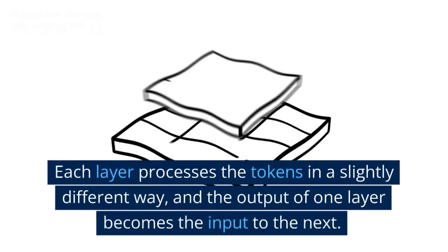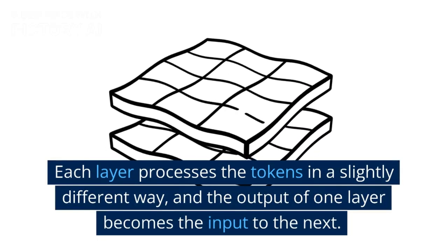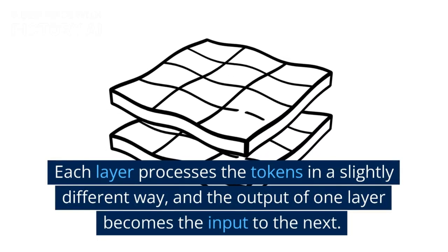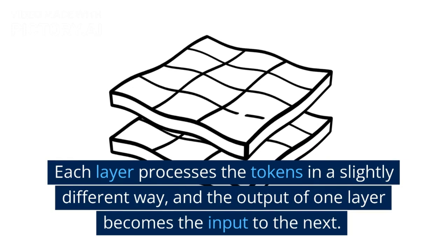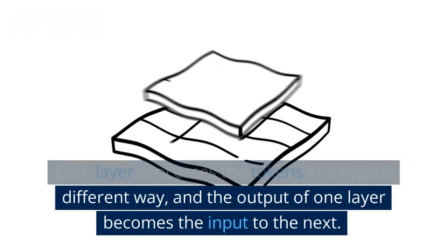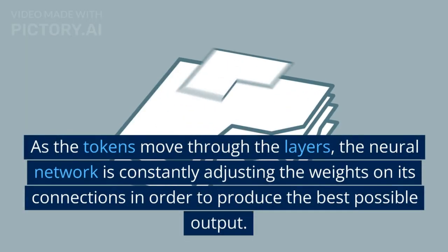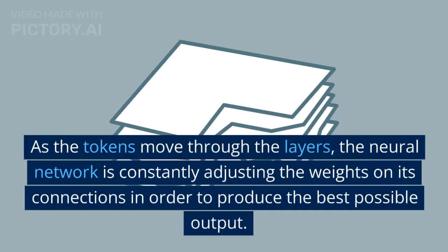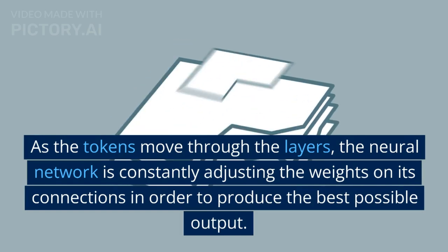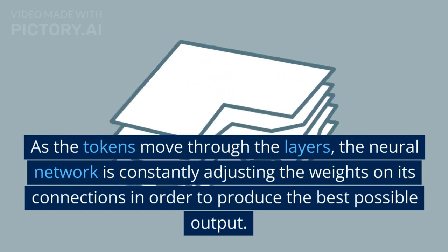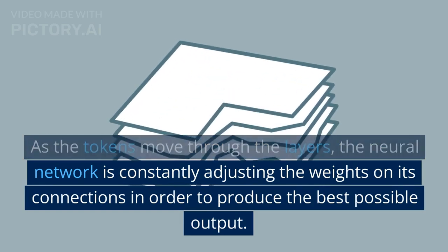As the tokens move through the layers, the neural network is constantly adjusting the weights on its connections in order to produce the best possible output. This is where the learning part of deep learning comes in. By analyzing millions of examples of text, ChatGPT has learned to recognize patterns and make predictions about what should come next.